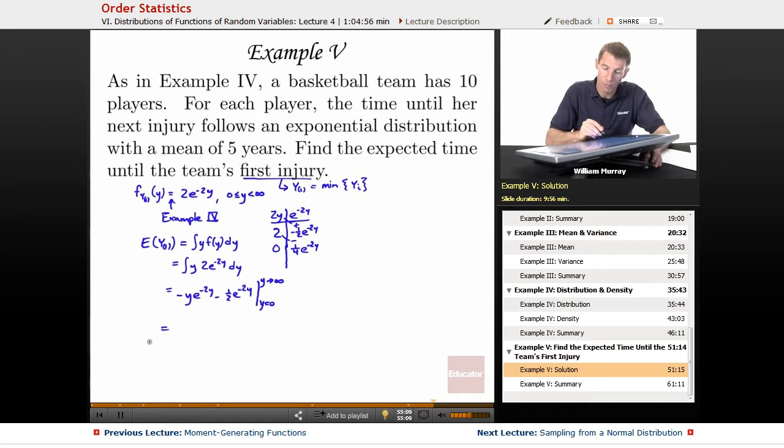And now, if we plug in y equals infinity, these exponential terms are going to drag everything to 0. You could do L'Hopital's rule on that, or you could just know that exponential terms in the denominator always beat polynomials. So, I'm not even going to worry about my exponential terms. They're both 0. But if I plug in y equals 0, I get 0 for the first term, and then the second term I get plus, because it's minus a negative, plus 1 half e to the 0, which is 1 half.